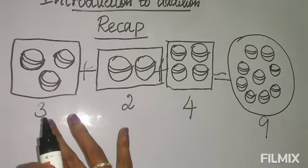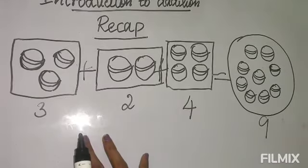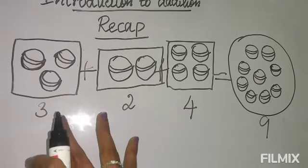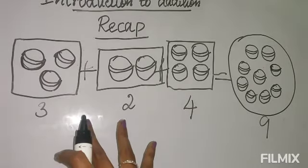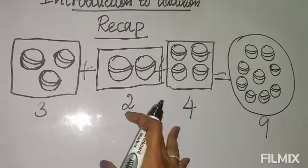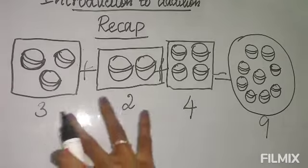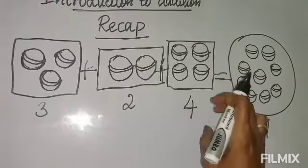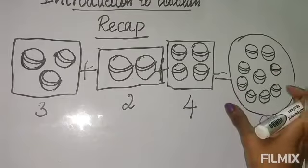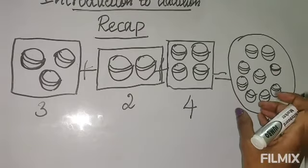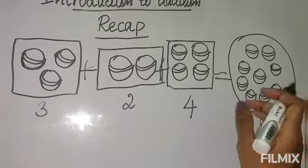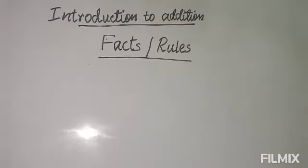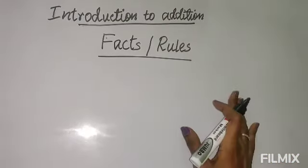For addition, at least you need 2 numbers. Two individual numbers or more than two - these numbers are there individually, and we put them all together in one and count them. That is called addition. Now let's see some facts - the rules of addition.